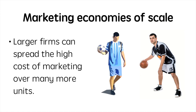Marketing economies of scale occur because large firms can spread the high cost of marketing over many more units. If Nike sponsors LeBron James with a multi-million dollar contract, they will make the money back on the sales of many pairs of sneakers. In this case, it makes sense for them to pay him to wear and endorse Nike shoes. This is not the case for a smaller athletic shoe company — it wouldn't make sense to pay so much to a big-name athlete because it is unlikely they would sell a sufficient number of shoes to cover their sponsorship expenditure.